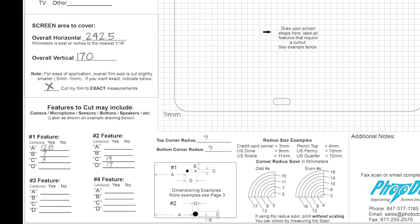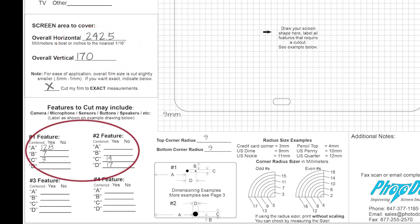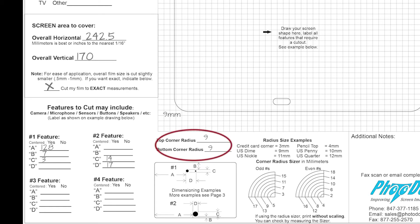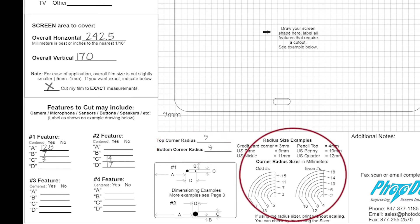Also, the overall dimensions that we found on our tablet, along with the features — number one being your camera, and number two being a button or a fingerprint reader. If you have any speakers on the side, you can put those in the other features. The corner radiuses are listed here in U.S. coins, or we have a corner radius template that you can use as well.